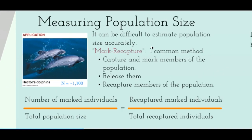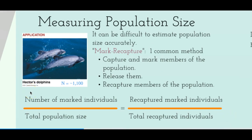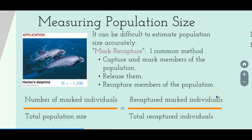To measure a population size in reality, we use the mark-recapture method. You capture and mark a certain number of individuals, release them, and then recapture members of the population after a period of time. Using the equation, you can estimate the total population size. You already know the number of initially marked individuals and the number of marked individuals in the recapture. For example, if you recapture 100 squirrels and 70 were marked initially, the recaptured-marked count is 70 and total recaptured is 100.